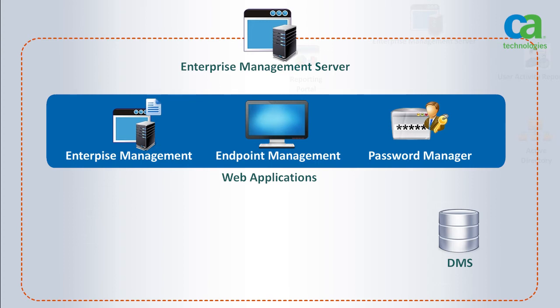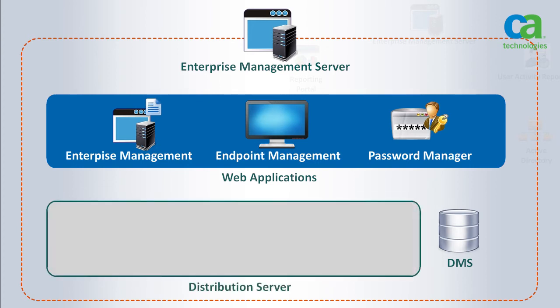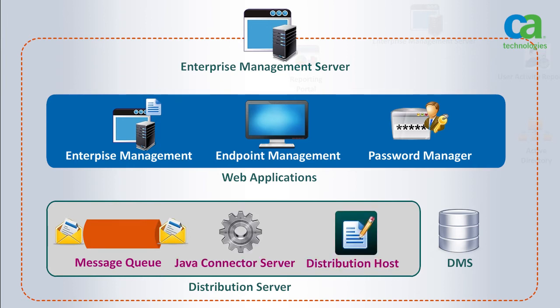The third component is the distribution server, which acts as the primary communication hub between management components and secured endpoints. Since the distribution server is such a key component of the enterprise management server, let's examine its working in detail. It consists of three components: the message queue, the Java connector server, and the distribution host.